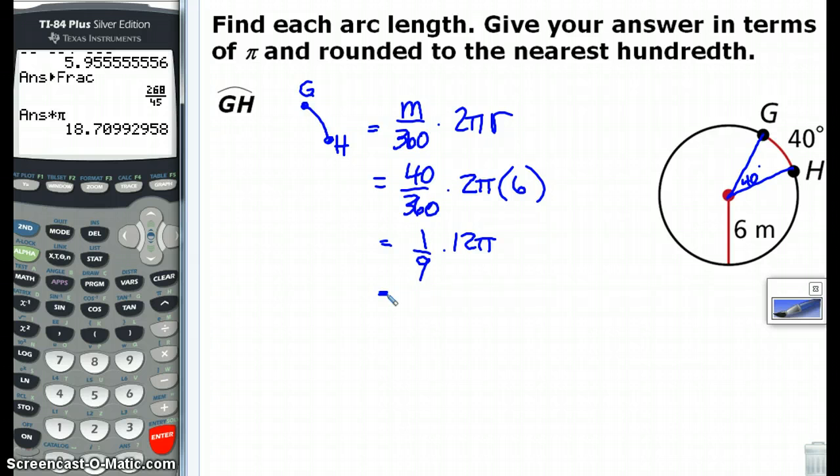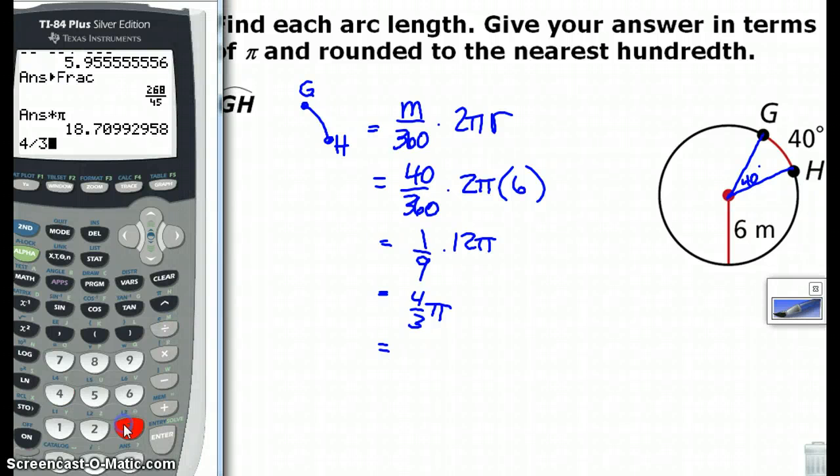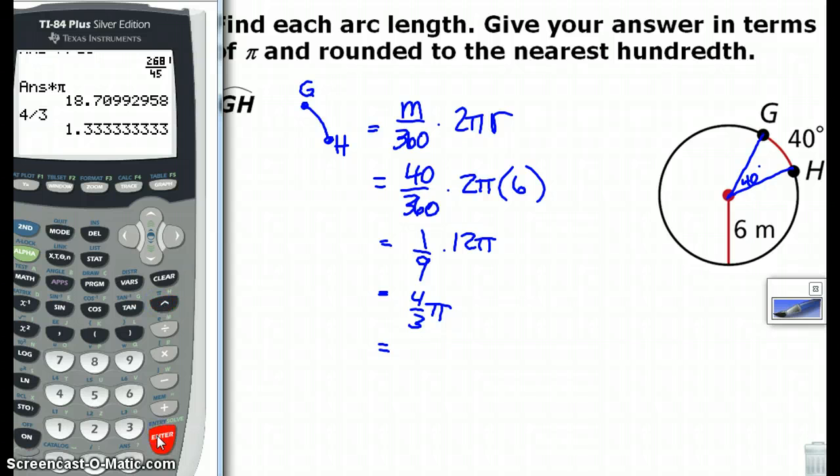Let's go ahead and reduce these times 12 pi. 9, so that's going to be divided by 3, and we're going to get 4 thirds pi. And round your answer in terms of pi in the nearest hundredth. So, 4 divided by 3 equals, and multiply times pi, and there it is.